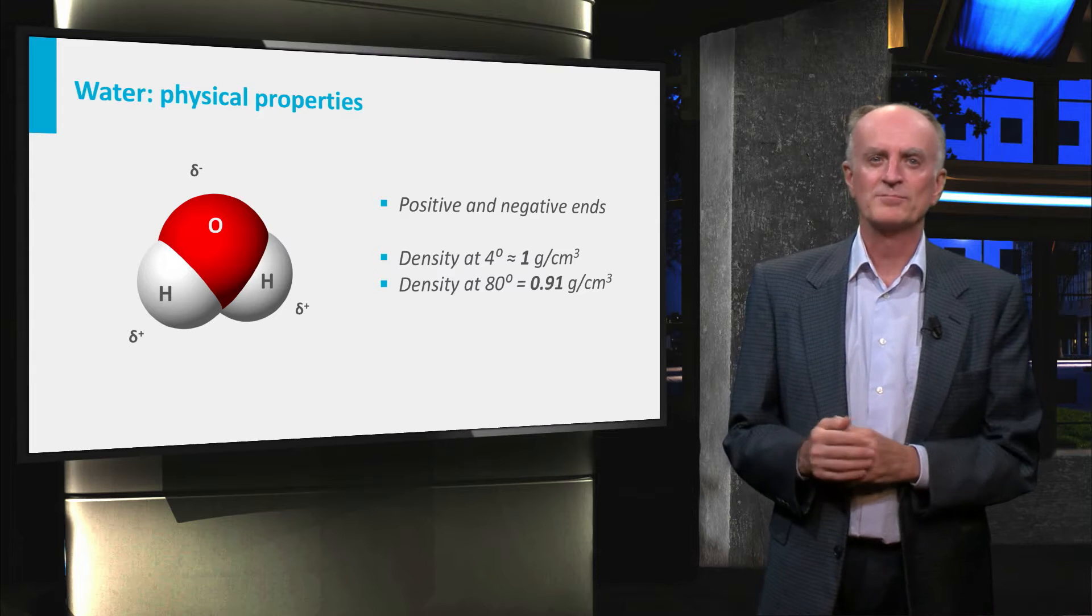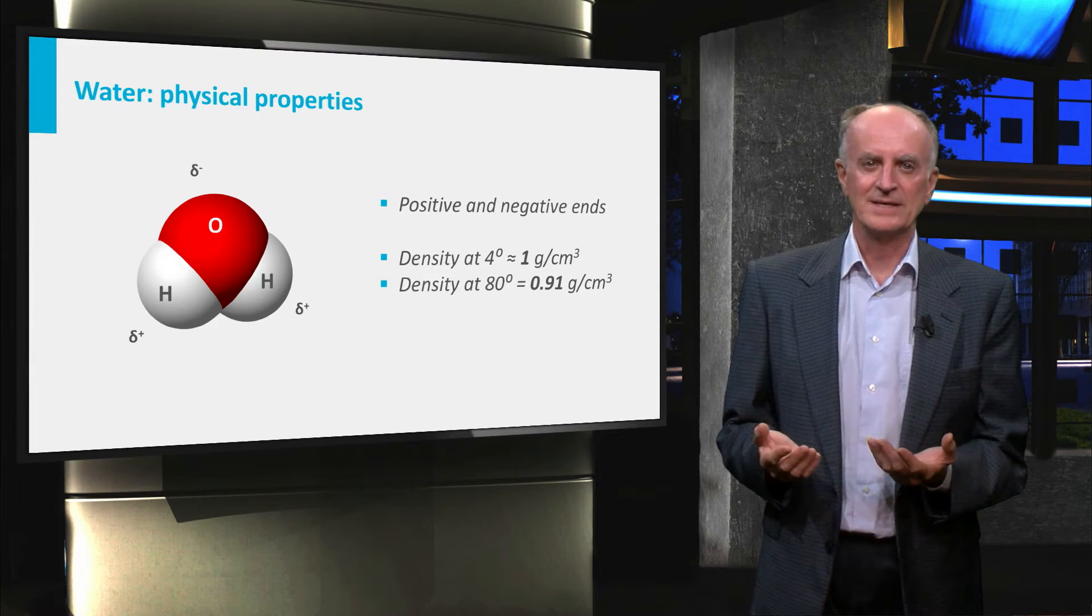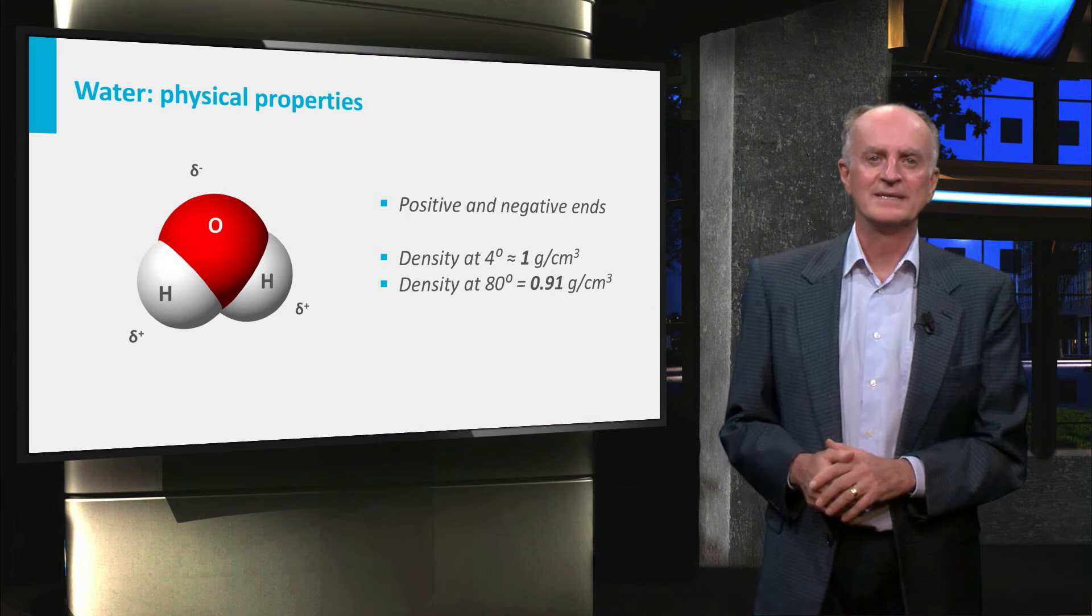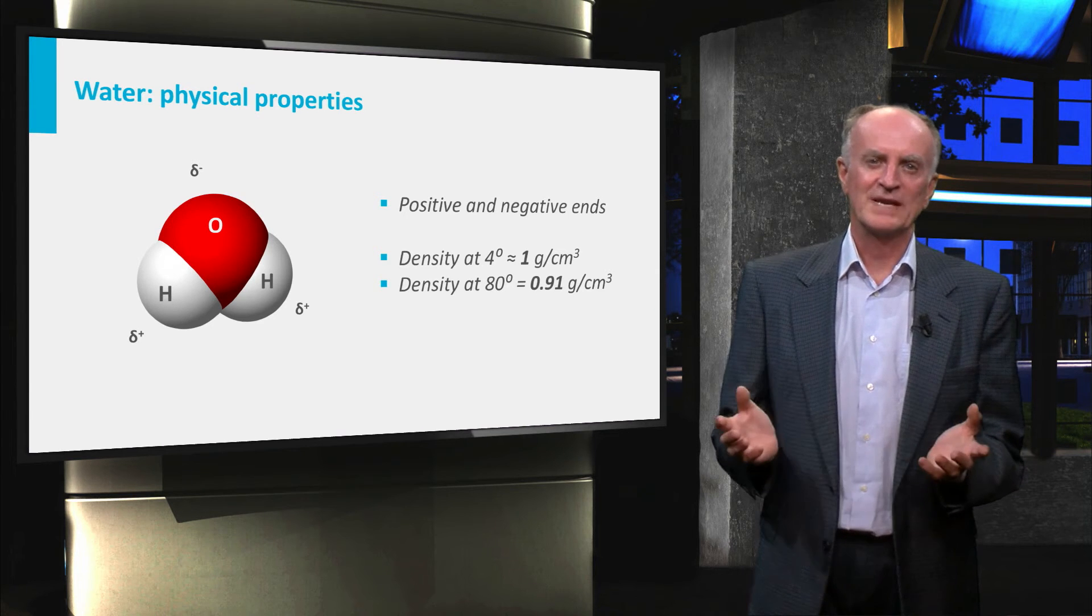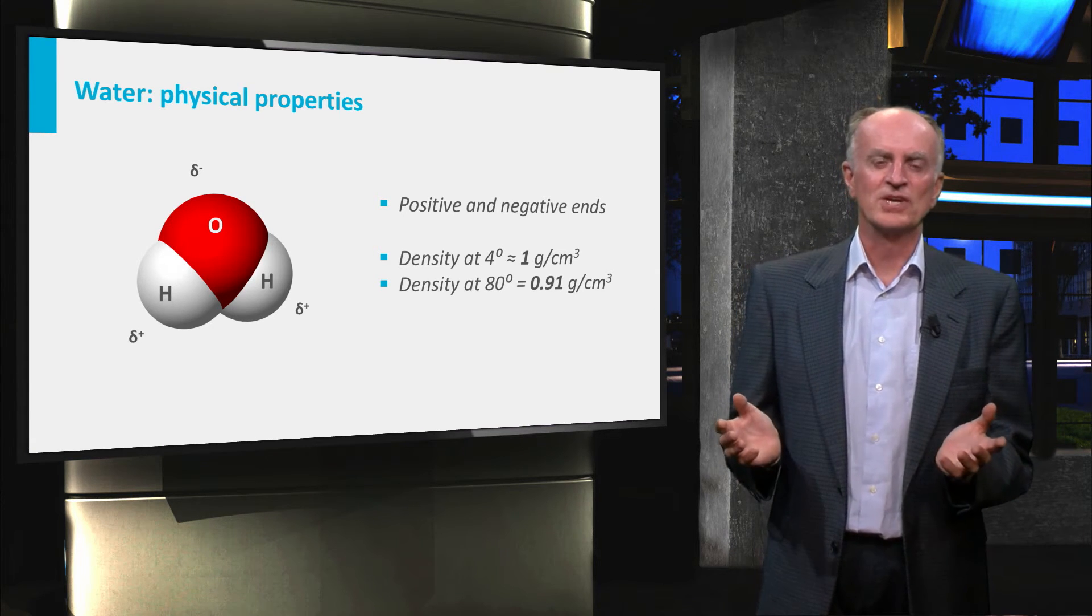A very important property of water is its density, which is around 1 g per cubic centimeter. At temperatures relevant to hydrogeology, these values don't change much.